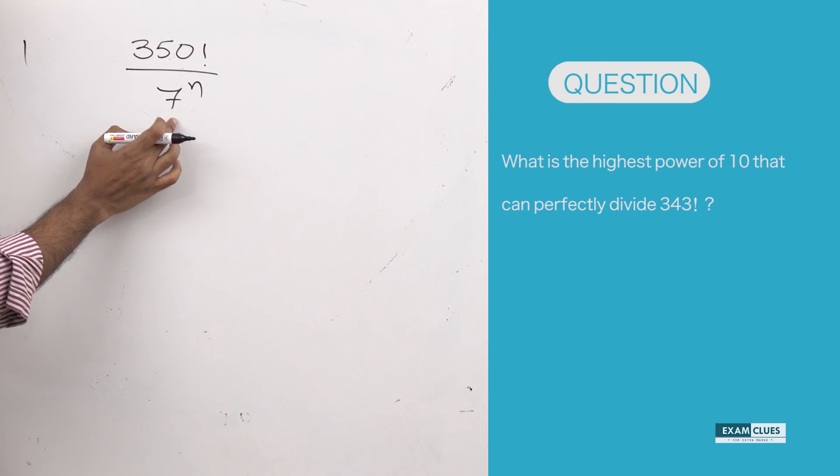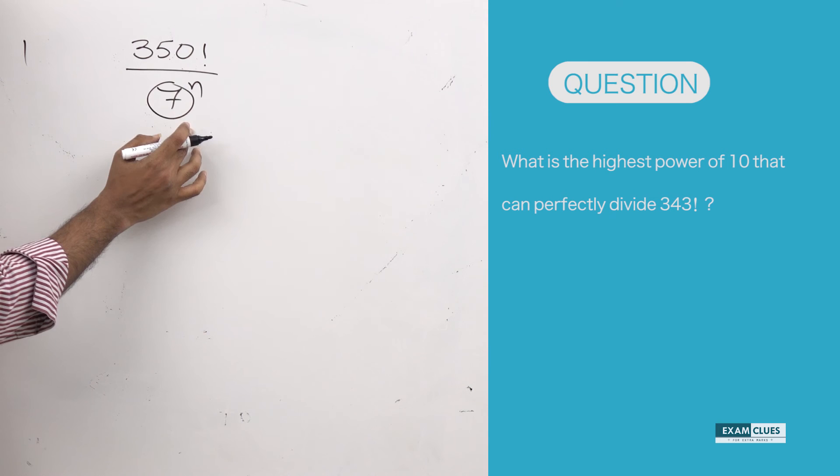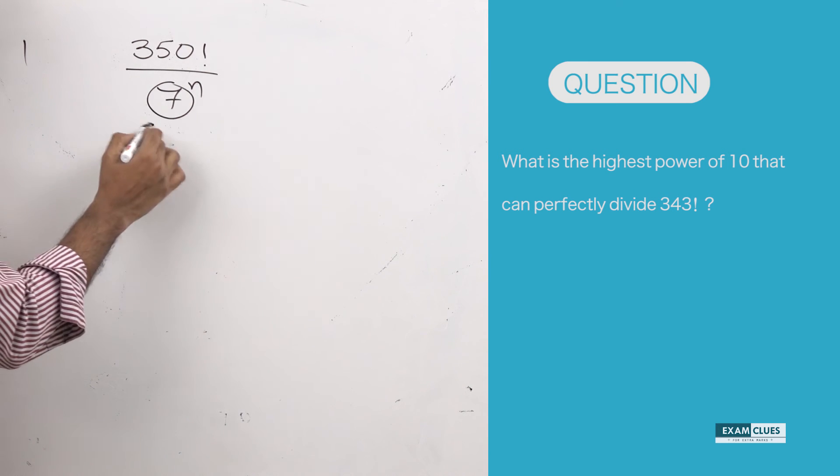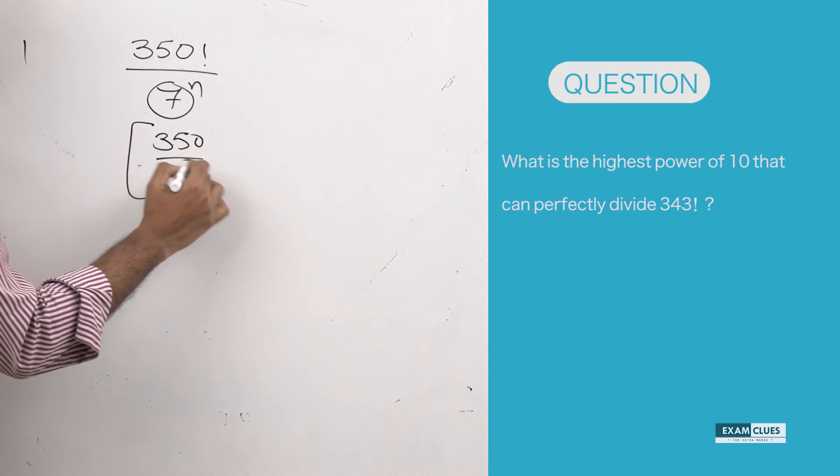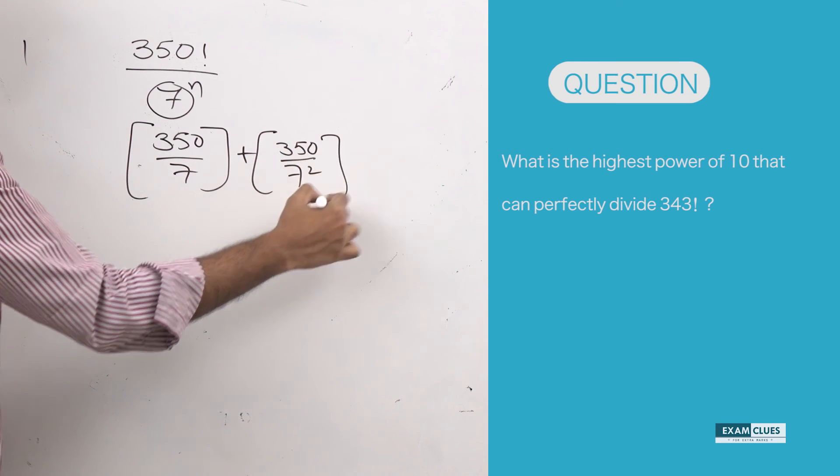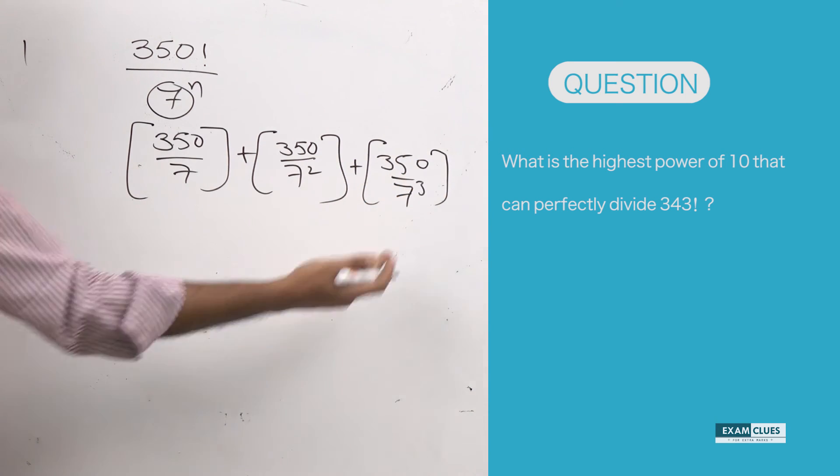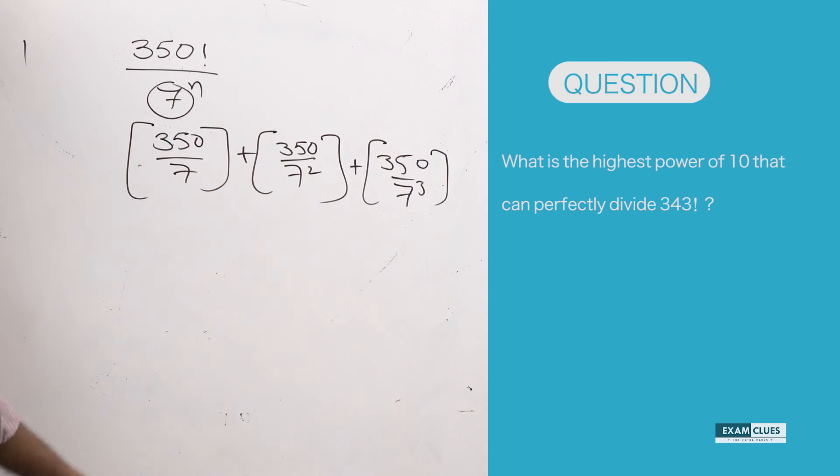If it's not a prime number, we're supposed to factorize it and find the number for which the power is smaller. In this case, 7 is already a prime number. The formula we need to apply is: 350 divided by 7, plus 350 divided by 7 squared, plus 350 divided by 7 cubed. And here I'll stop because that will be 343, so it will already yield 1, and after that will be 0.